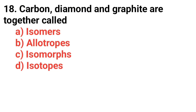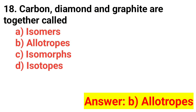Question number eighteen: Carbon diamond and graphite are together called? The correct answer is option B: allotropes.